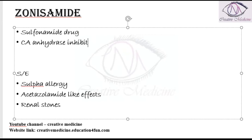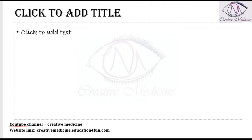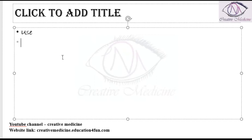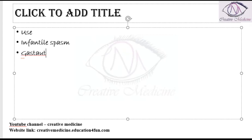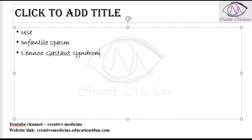Regarding Zonisamide uses, it can be used especially in infantile spasm and it can also be used in Lennox-Gastaut syndrome.